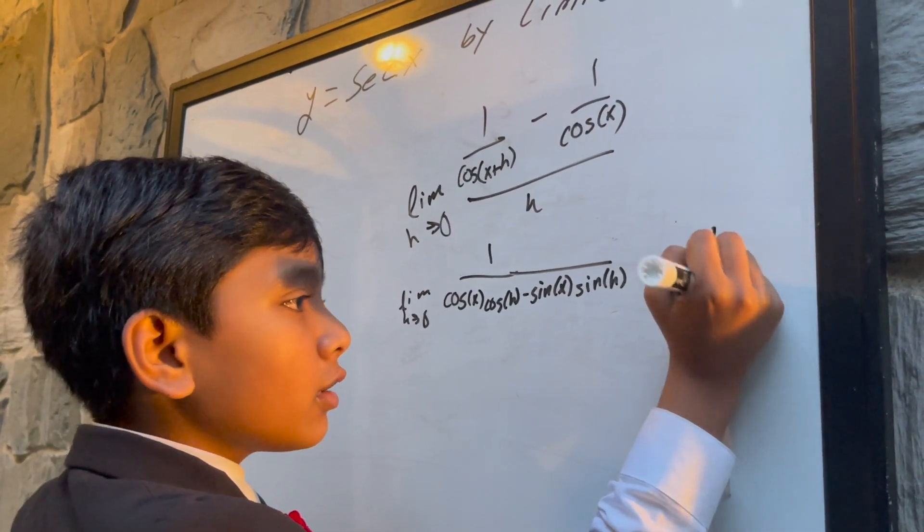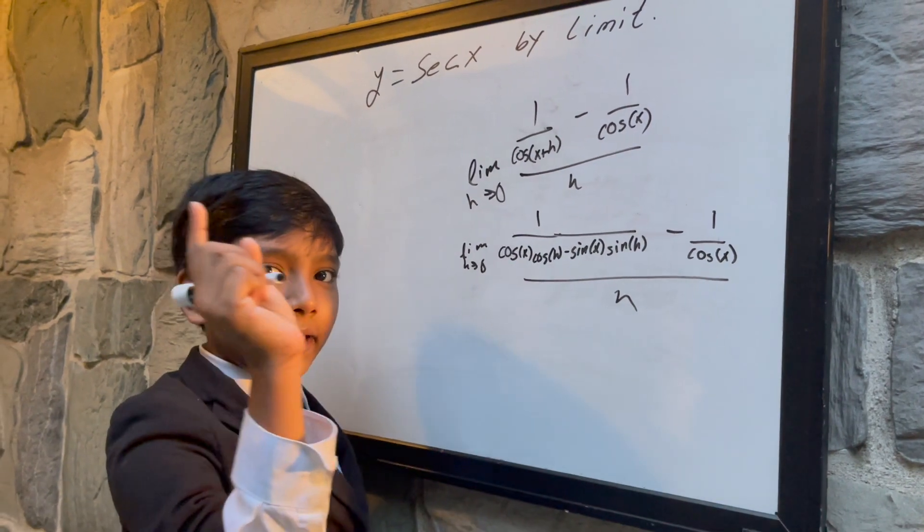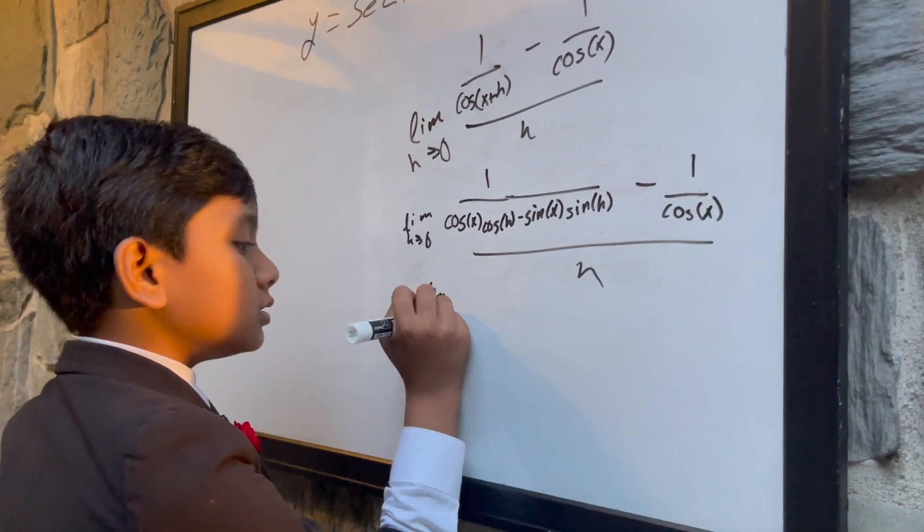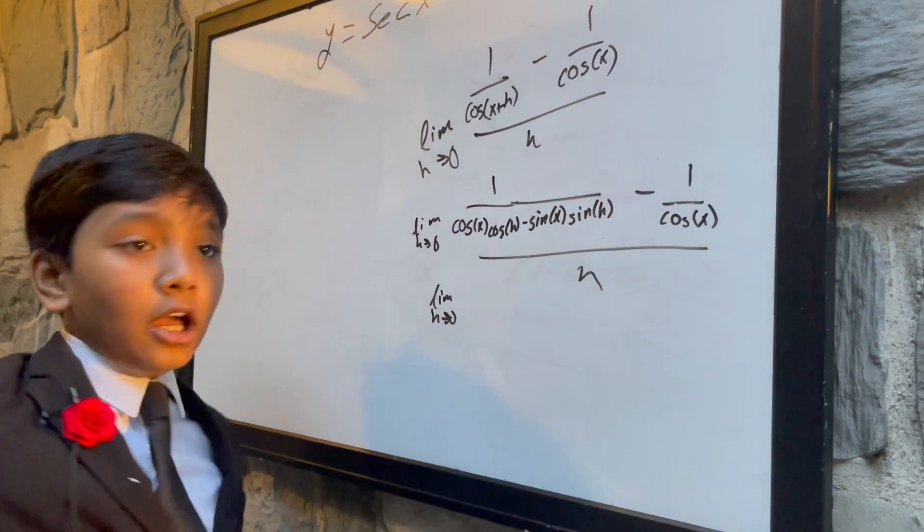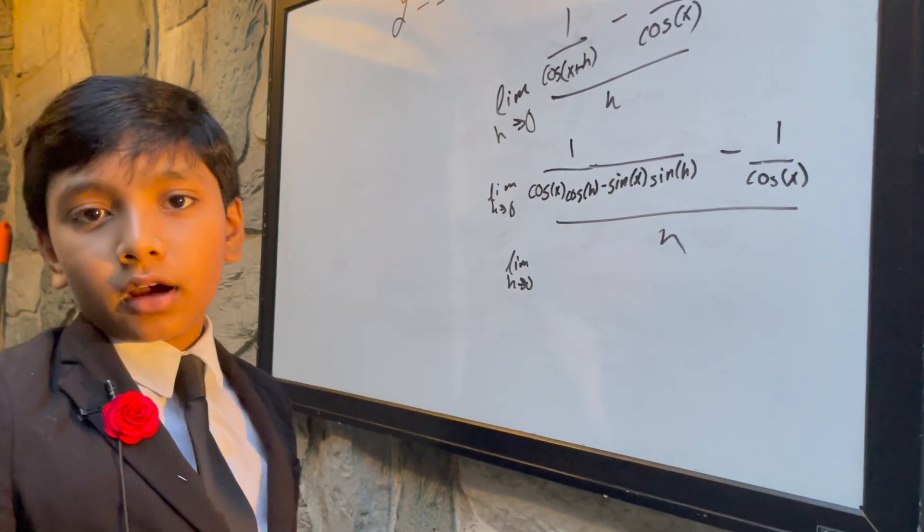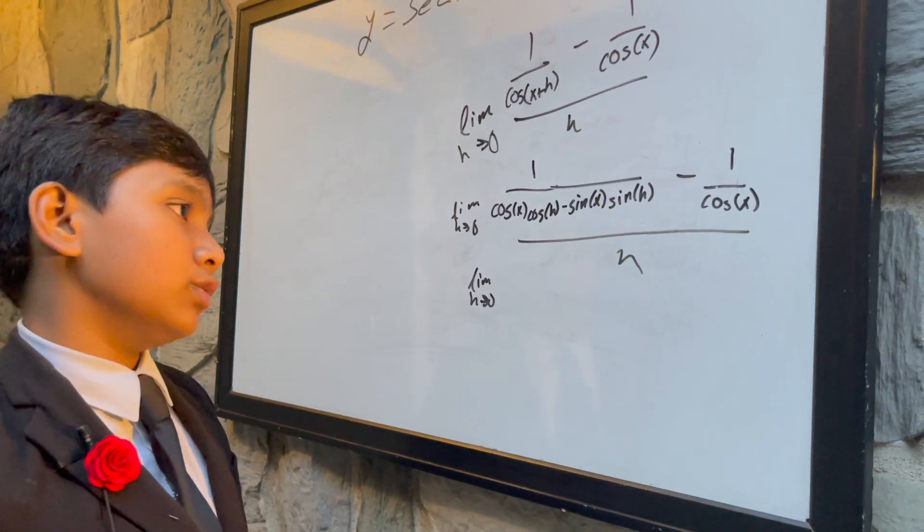But, what we're going to do is we're going to make a common denominator. So, we're going to multiply this by cosine x over cosine x, and this by cosine of x plus h over cosine of x plus h.